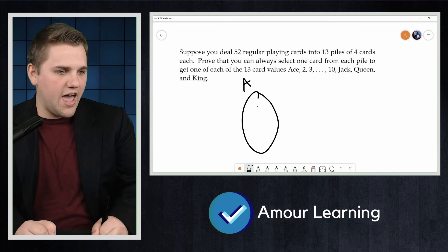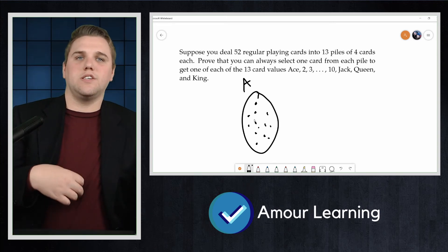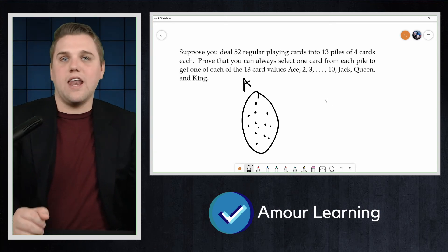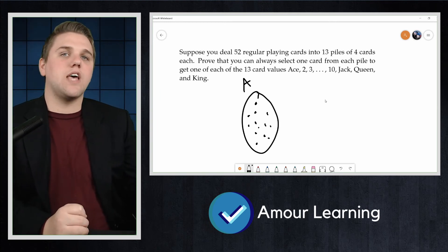So here's set A, and there are 13 vertices in that set. Each representing one of the 13 card values.